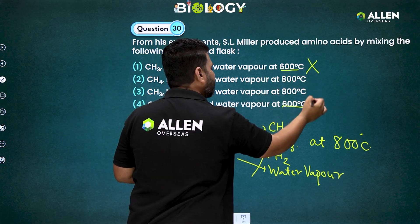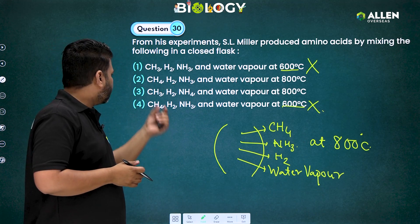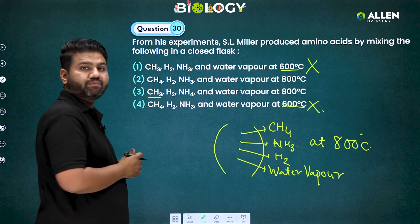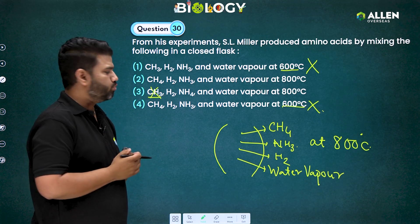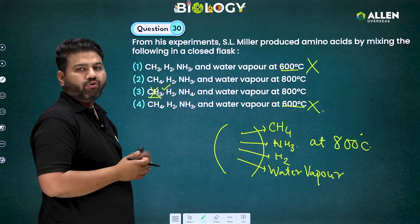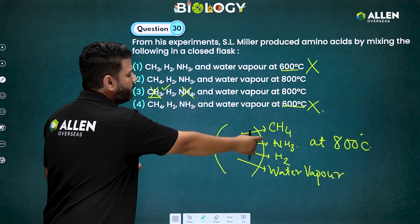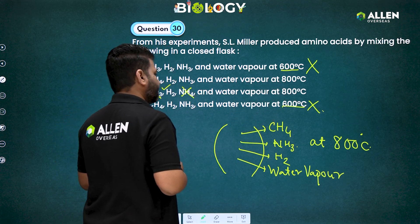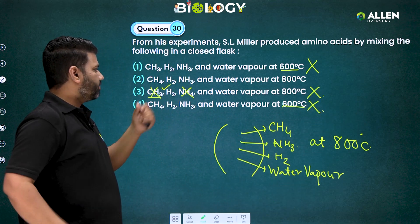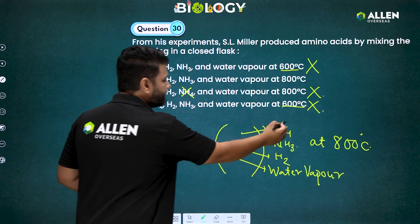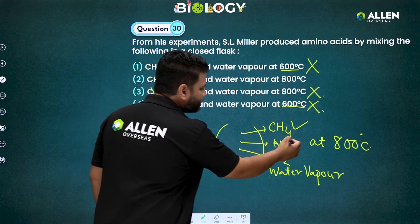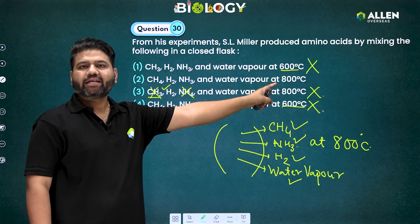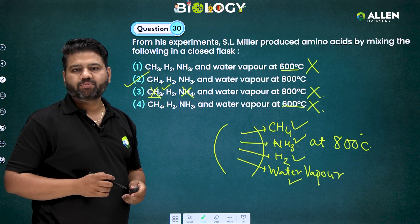Focusing on options 2 and 3: option 3 says CH₃ (incorrect — should be CH₄), H₂ (matching), NH₄ ammonium ion (incorrect — should be NH₃ ammonia), water vapor (correct), and temperature correct. So option 3 is only partially correct and cannot be selected. Option 2 says CH₄ (matching), NH₃ ammonia (matching), H₂ (matching), water vapor (matching), and temperature 800 degrees Celsius (matching). Option number 2 is the correct answer for question 30.